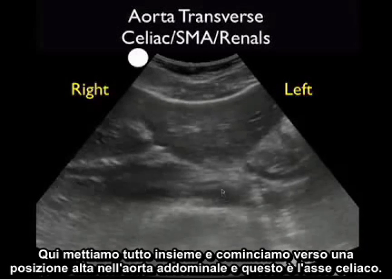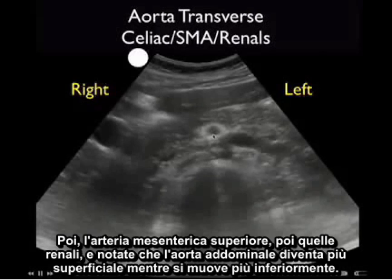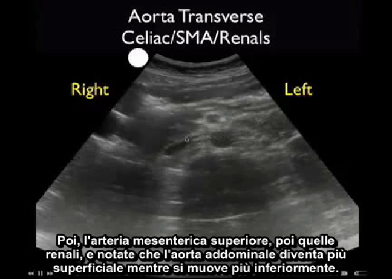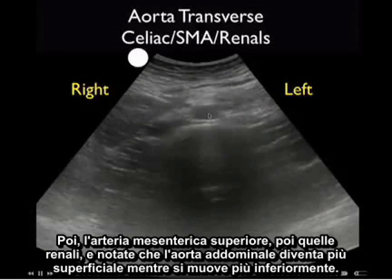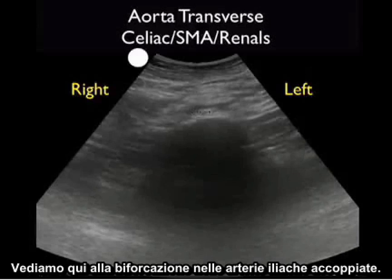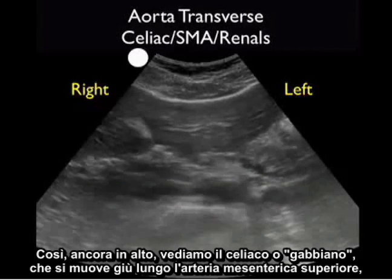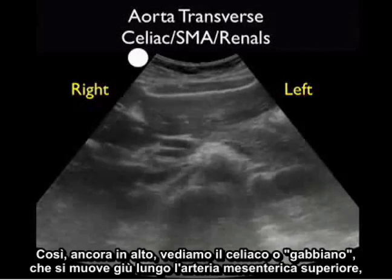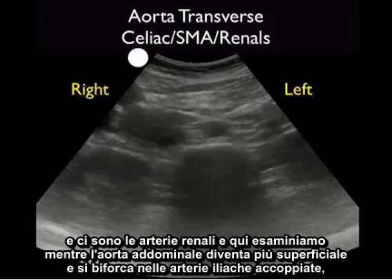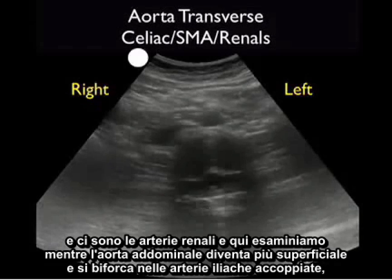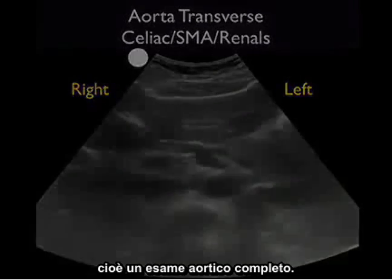Here we're going to put it all together and start from a position high in the abdominal aorta — there's the celiac axis, next the superior mesenteric artery, then the renals. Notice that the abdominal aorta becomes more superficial as it moves more inferiorly. We see the bifurcation into the paired iliac arteries. So again from the top: celiac or seagull, moving down the SMA, then the renal arteries, and the abdominal aorta becoming more superficial, branching into the paired iliac arteries. A complete aortic exam.